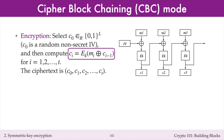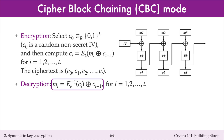The transmitted ciphertext includes the initialization vector C0. You can check that Bob can decrypt the ciphertext to get the plaintext, as shown by this equation.